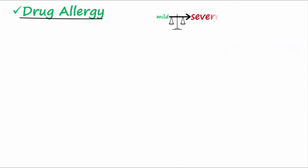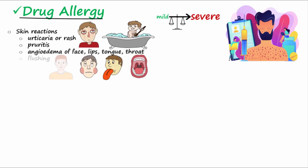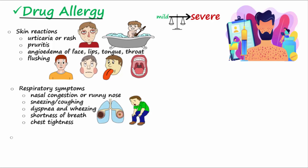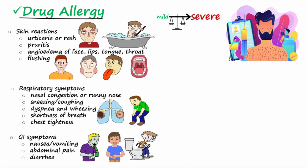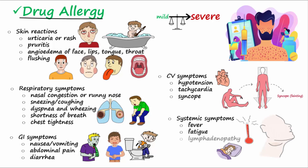An allergic drug response can range from mild to severe. Symptoms occur in different parts of the body and may include skin reactions like urticaria, rash, pruritus, angioedema, and flushing. Various respiratory symptoms include dyspnea and shortness of breath. GI symptoms may also occur, including nausea, vomiting, abdominal pain, and diarrhea. Cardiovascular symptoms like hypotension, tachycardia, and syncope may also occur. Systemic symptoms may include fever, fatigue, and swollen lymph nodes.